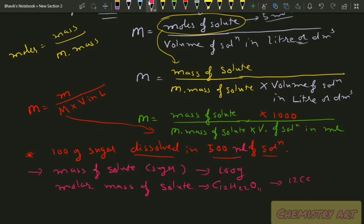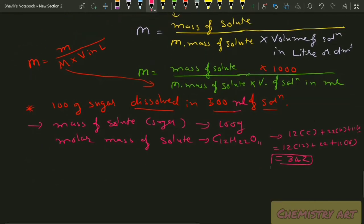Carbon: 12 × 12 = 144; Hydrogen: 22 × 1 = 22; Oxygen: 11 × 16 = 176. The molar mass of sugar is 342 g/mol. Yes, 342 — this is the molar mass for sugar (not glucose, though glucose is 342 too). Now let's put the values.